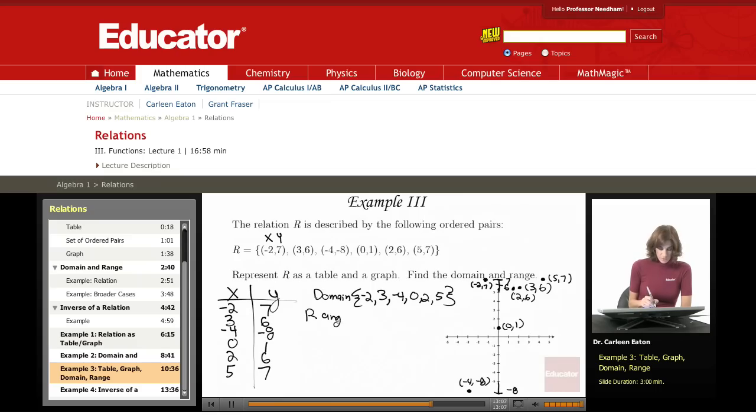For the range, I have 7, 6, negative 8, 1. Well, I already have 6 listed. If I listed it again, that would be fine, but I really don't need to. And then 7. I already have 7. So my range is actually only these 4 unique numbers. I don't need to list numbers twice.